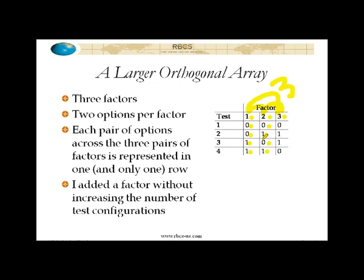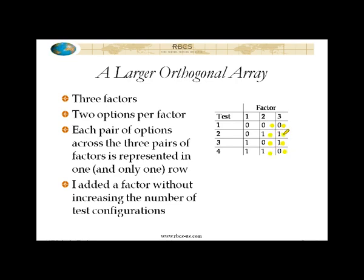Now let's go with factors one and three: zero-zero, zero-one, one-zero, one-one. And finally, factors two and three: zero-zero, zero-one, one-zero, one-one. There they are. So they're all there.